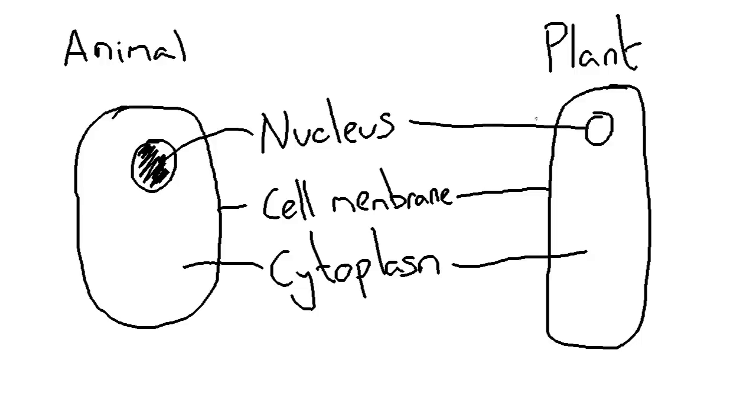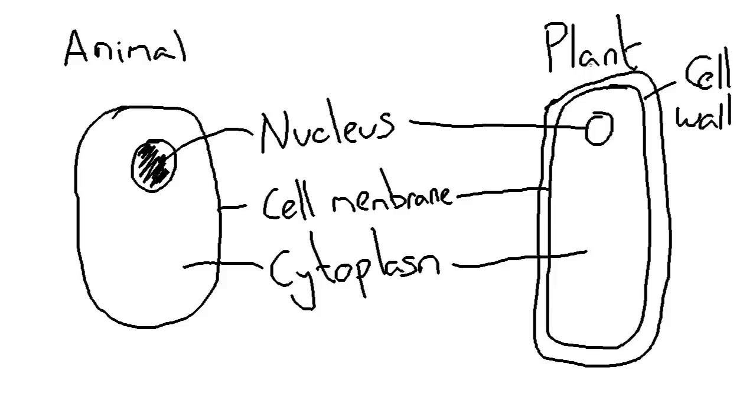In addition, on a plant cell, you have something called a cell wall, and this goes on the outside of the cell membrane. It goes around the outside of the cell membrane, and it's thick, and it gives the plant cell structure and support. So a plant cell has both a cell wall and a cell membrane.